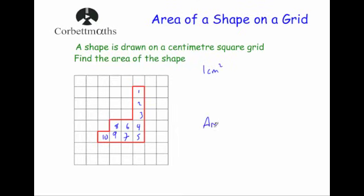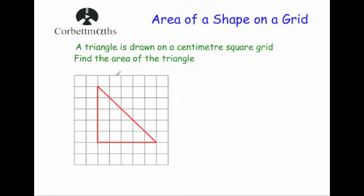And that's it. Now sometimes the shape might include half squares like this one. This question says the triangle is drawn on a centimeter square grid, find the area for the triangle.